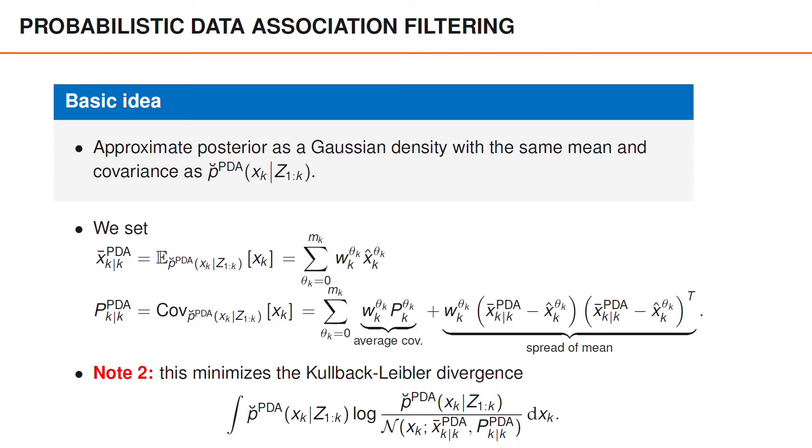The covariance of a Gaussian mixture is slightly more involved and contains two parts. The first is the weighted sum of the covariances of the different Gaussian components. You can think of this as the average covariance. The second part is a weighted sum over the squared differences between the mean of the mixture and the mean of the individual component. This part can be viewed as a measure on how much the means are spread out.